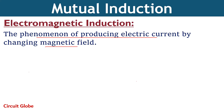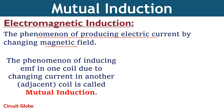Electromagnetic induction is of two types: self-induction and mutual induction. We have made a separate video on self-induction. Now coming back to mutual induction — mutual induction is defined as the phenomenon by which EMF is induced in one coil due to changing current in another coil.